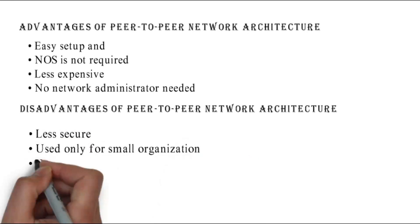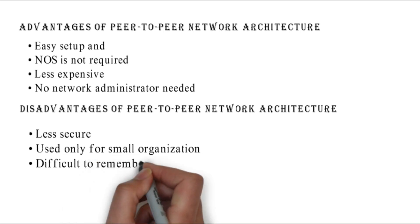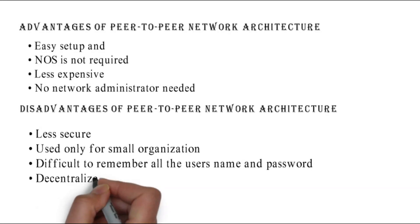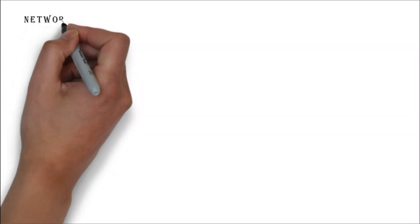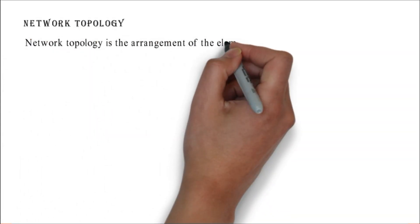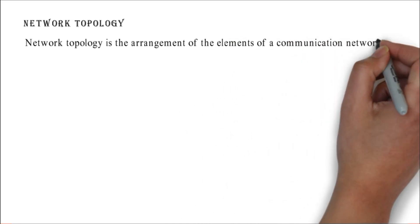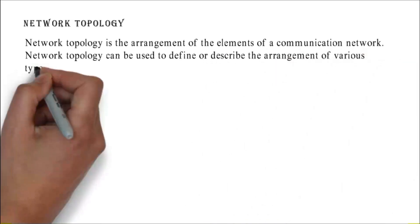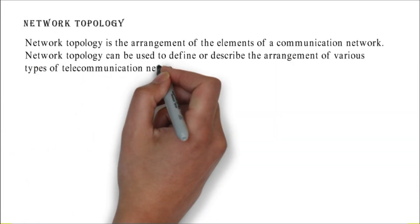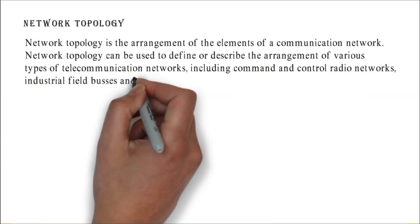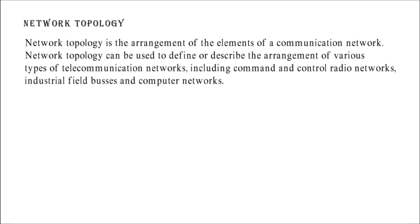Disadvantages of peer-to-peer network architecture: less secure, more and more remote. Network topology. Network topology is the arrangement of the elements of a communication network. Network topology can be used to define or describe the arrangement of various types of telecommunication networks, including command and control radio networks, industrial field buses, and computer networks.